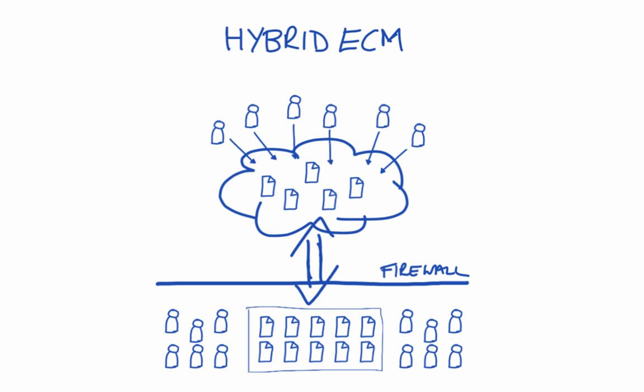Let's start off by looking at Hybrid ECM. Included in the Alfresco One subscription is a secure network in the cloud. Users can use Alfresco installed on-premise to share, collaborate, and work on files with other team members within the organisation. But Hybrid ECM allows them to synchronise that content out to a cloud installation.